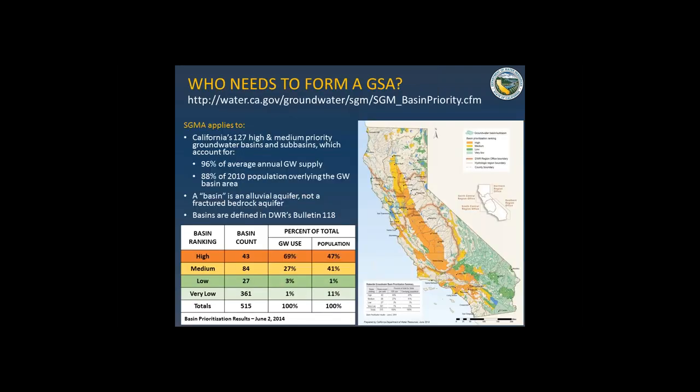So who needs to form a GSA? SGMA applies to all of California's 127 high and medium priority basins. There are 515 individual basins and subbasins total, but through the basin prioritization process those 127 basins required to comply with SGMA represent 96% of the annual groundwater supply from those basins, as well as 88% of the population overlying those groundwater basins. The orange and yellow basins must comply with SGMA. Low and very low priority basins are not required to form GSAs or secure a GSP, though agencies within those basins are highly encouraged to follow the process to sustain and manage their groundwater resources.